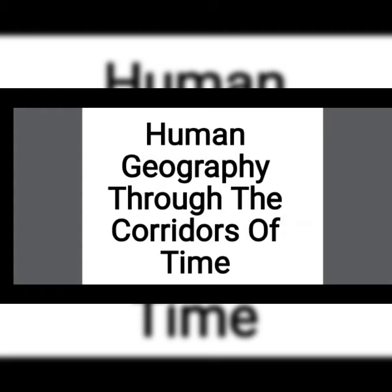The next topic is human geography through the corridors of time. The process of adaptation, adjustment, and modification of the environment started with the appearance of human beings over the surface of the earth in different ecological niches — meaning different habitats and dwelling places. After human beings appeared on Earth, the process of adaptation, adjustment, and modification of the environment began.